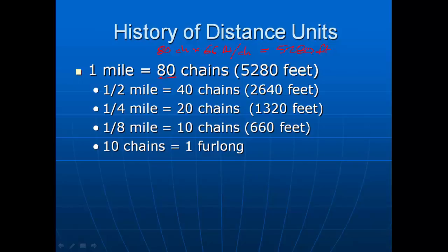You may have heard legal descriptions of land — especially agricultural land — described as 'the east 20 chains' of a certain parcel. We break a mile down into smaller parts: 10 chains is 660 feet; a quarter mile is 1,320 feet because 20 chains times 66 feet equals 1,320. You may have heard the term one furlong — that's an eighth of a mile, or 10 chains — a unit specific to horse racing.